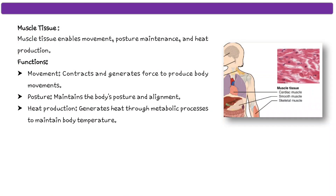The next tissue type is muscle tissue. Muscle tissue enables movement, posture maintenance, and heat production. Its functions are: movement — contraction and generation of force to produce body movement; posture — maintaining body posture and alignment; and heat production — generating heat through metabolic processes to maintain body temperature.